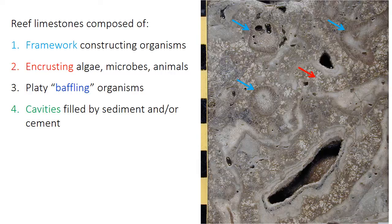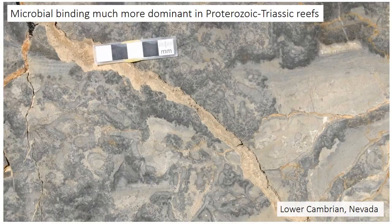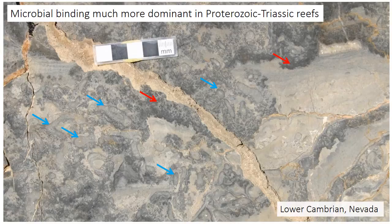There can also be platy baffling organisms, as well as cavities — open void spaces within the reef framework that can be filled with sediment or cement, or remain open as in this slab. Microbial binding was much more dominant in reefs of Proterozoic through Triassic age. This lower Cambrian reef contains a framework of archaeocyath sponges — the circular or cylindrical features — along with abundant clotted binding by a microbial structure called renalsis, and cavities filled with sediment and cement.